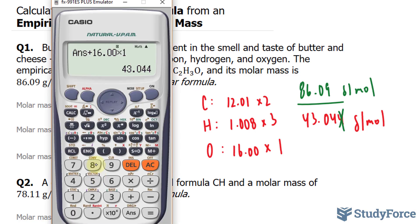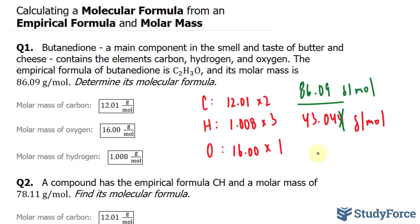So let's find out what 86.09 divided by the number that we just got gives us. We end up with approximately 2. So our factor N is equal to 2, and so I'll multiply this C by 2, which gives me C4, H6, and O2. That represents the answer to question number 1. Let's move on to question number 2.